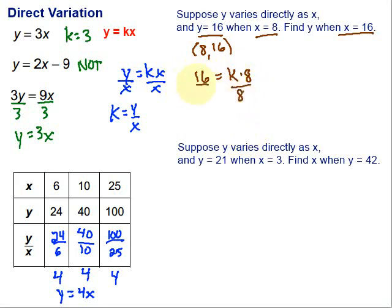I can solve that for k. So divide by 8, divide by 8. 16 divided by 8 is 2. So k equals 2. Now, what I'm going to do is take that k and plug it back in here. So at this point, I have y equals 2x.